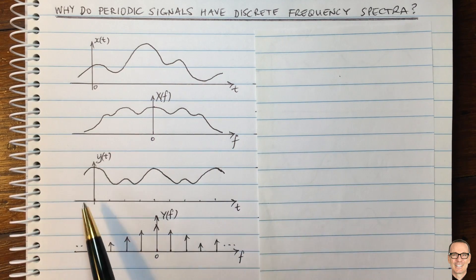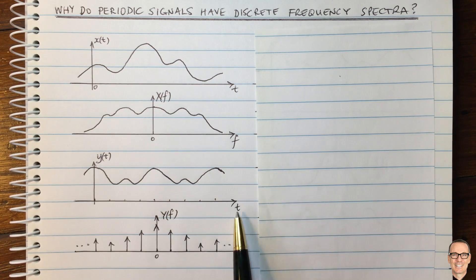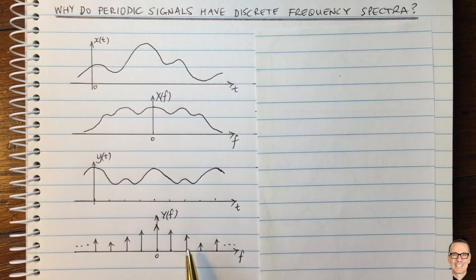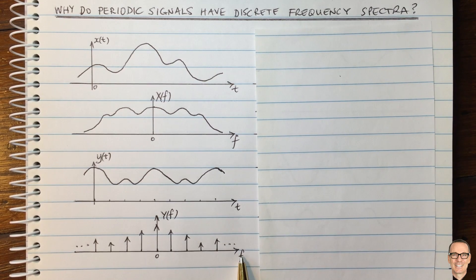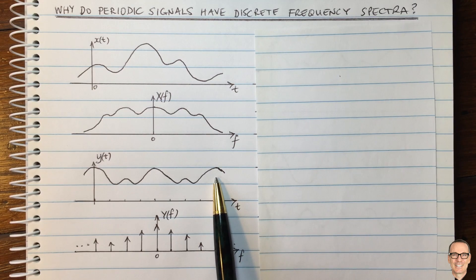So now let's look at a periodic signal. Here we have a signal that repeats in time. In the frequency domain, the Fourier transform shows a discrete frequency spectra where there are only these particular values of frequency that are contributing to this waveform. And why is that?